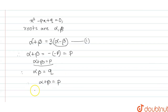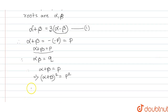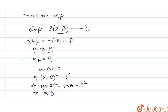Squaring both sides: alpha plus beta whole squared equals p squared. And alpha minus beta whole squared equals p squared minus 4 alpha beta, which gives alpha minus beta whole squared equals p squared minus 4q.